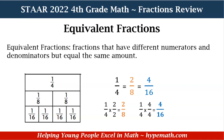The same thing with four-sixteenths. What we're going to do is multiply our numerator and denominator of one-fourth by four. When I multiply my numerators going across, one times four is equal to four, and four times four is equal to sixteen. So my equivalent fraction for one-fourth is also four over sixteen.